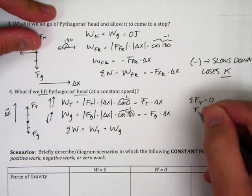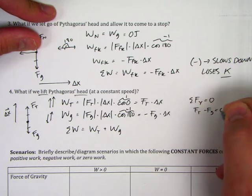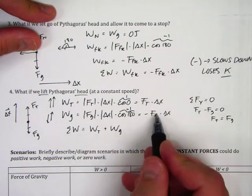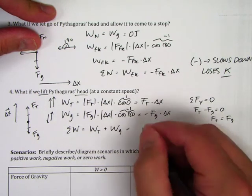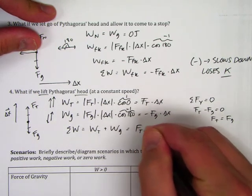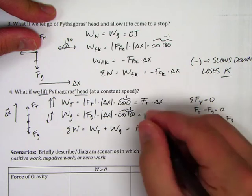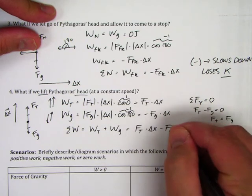FT minus FG equals zero. So FT equals FG. So these two works, with these two forces being the same, should cancel out. So let's see. FT times delta X plus a negative FG times delta X.